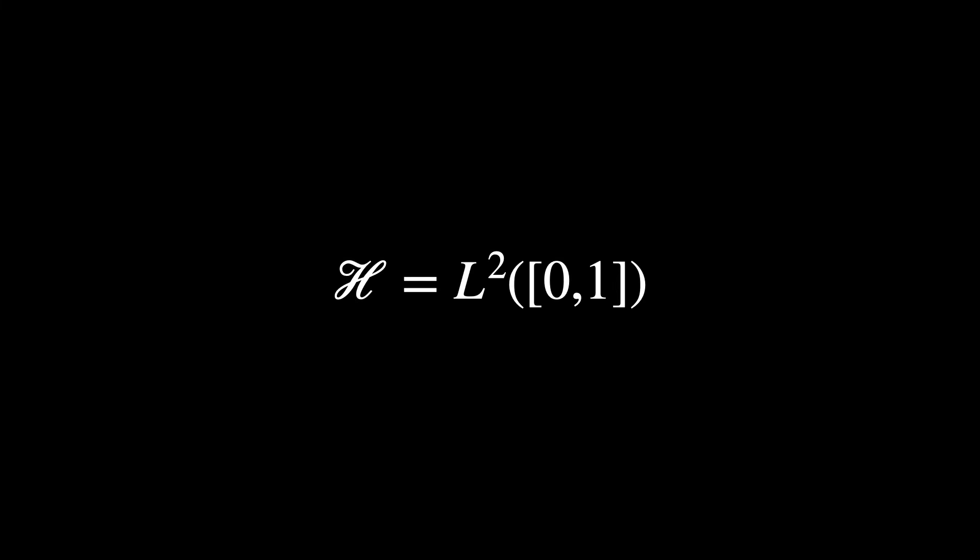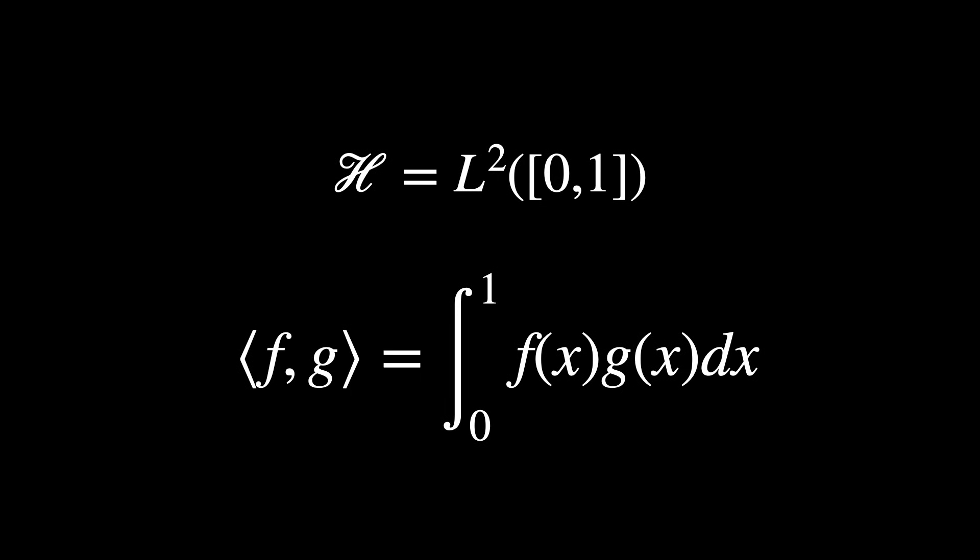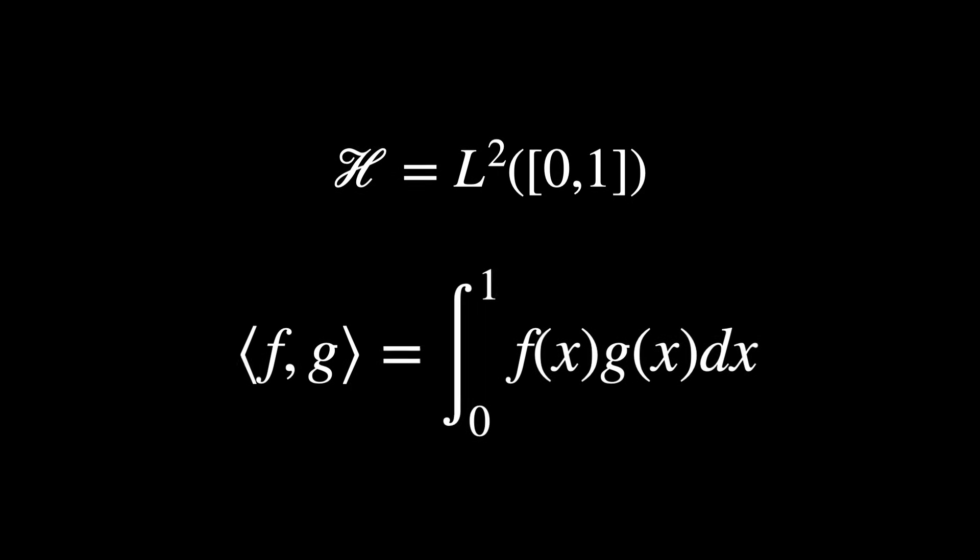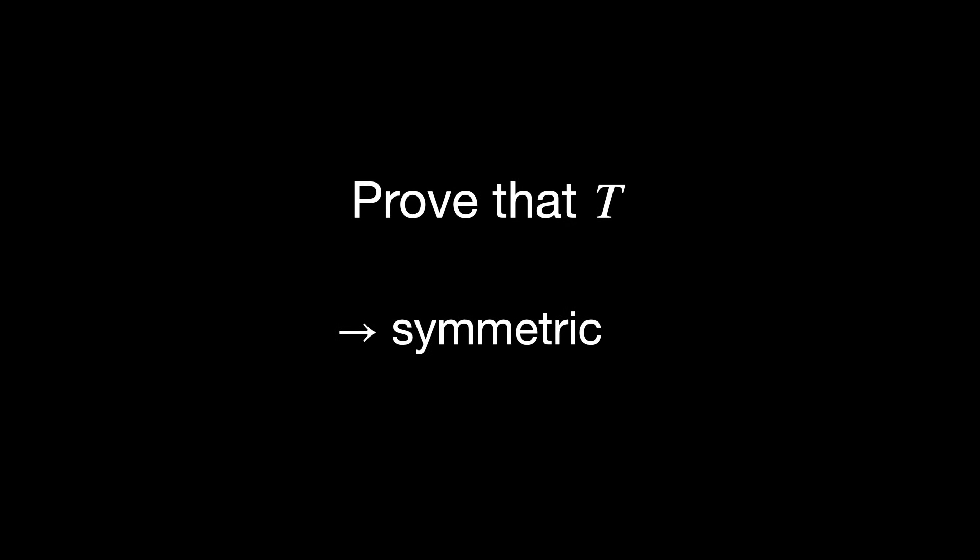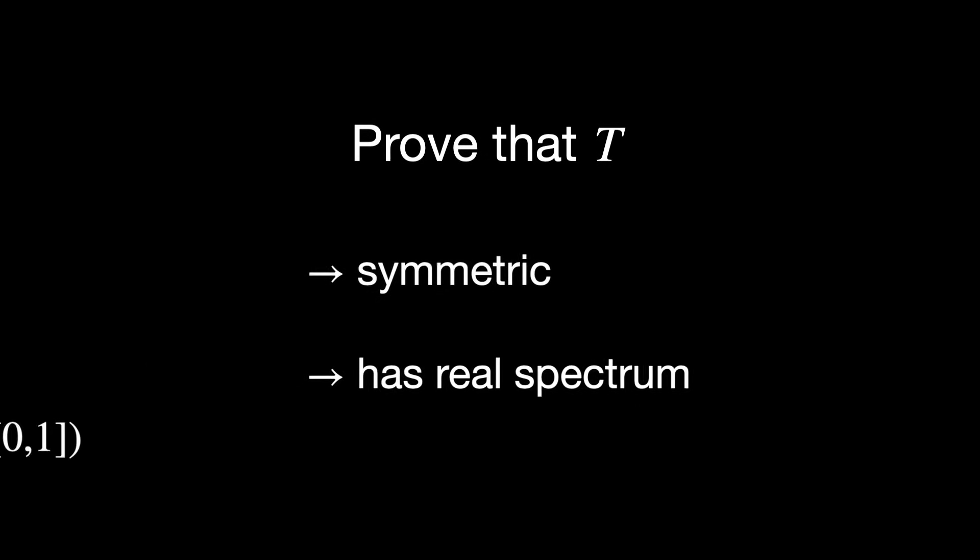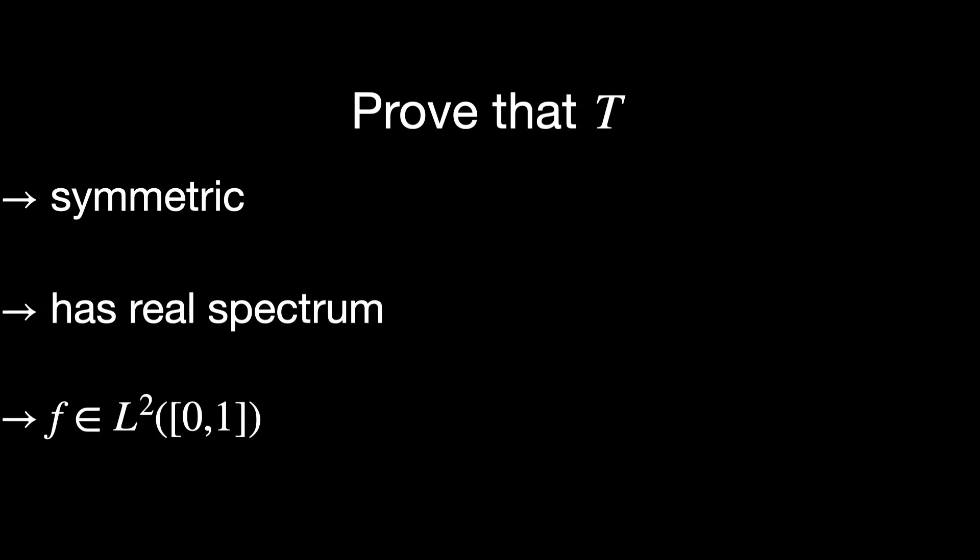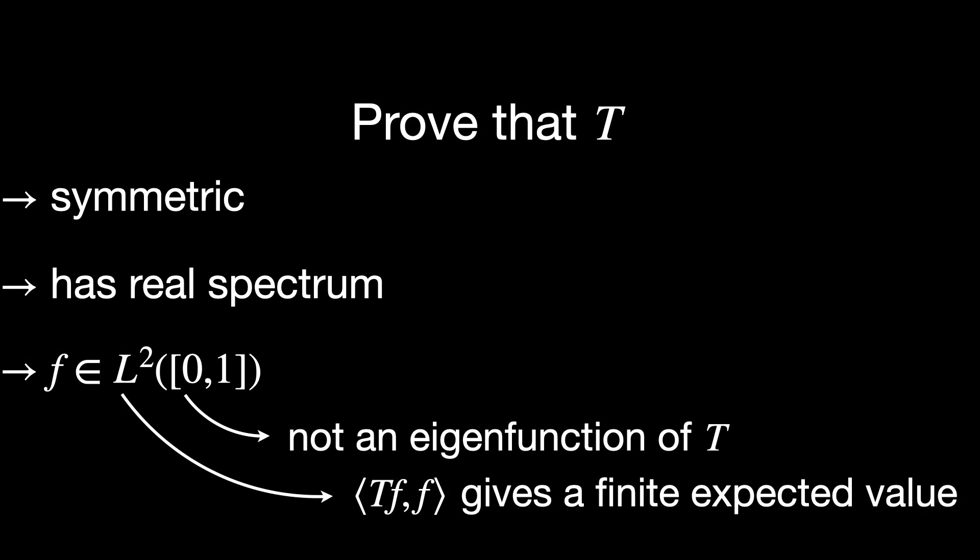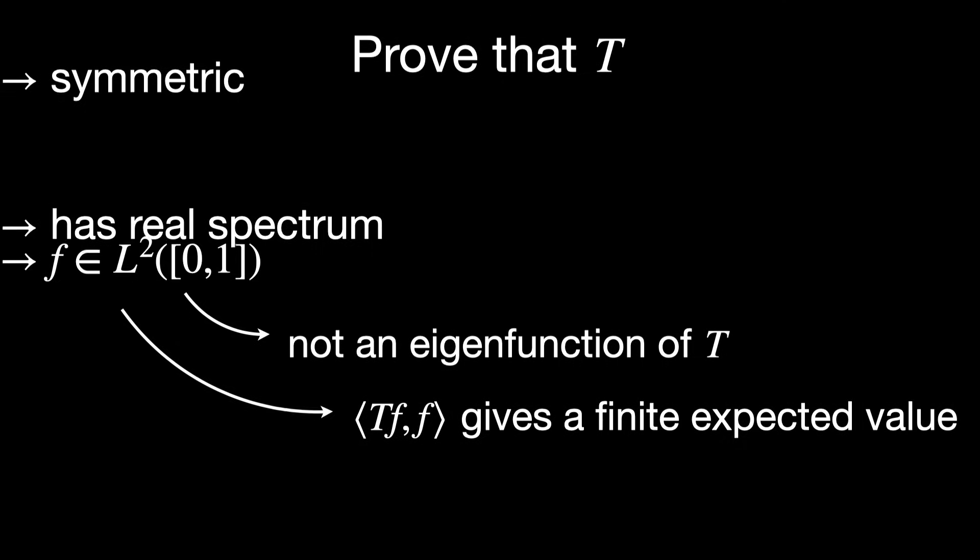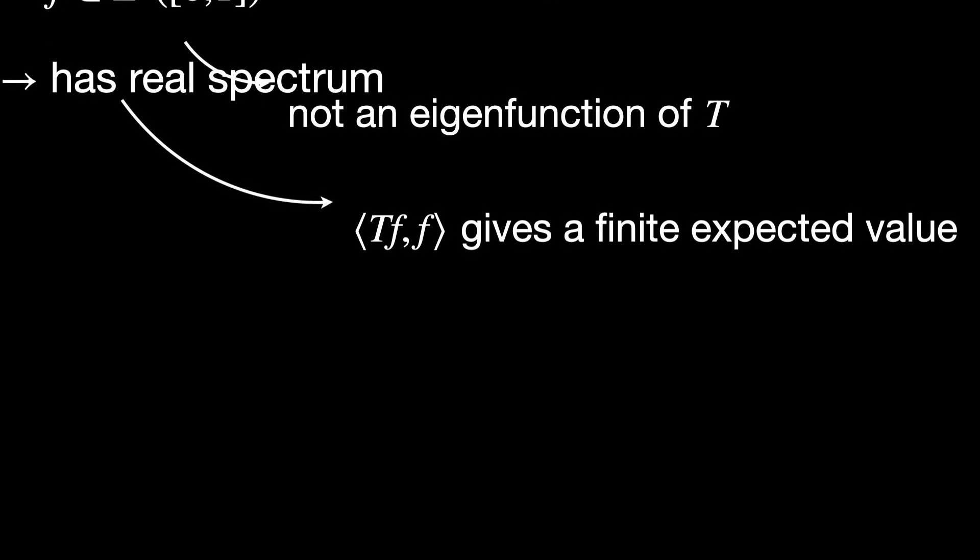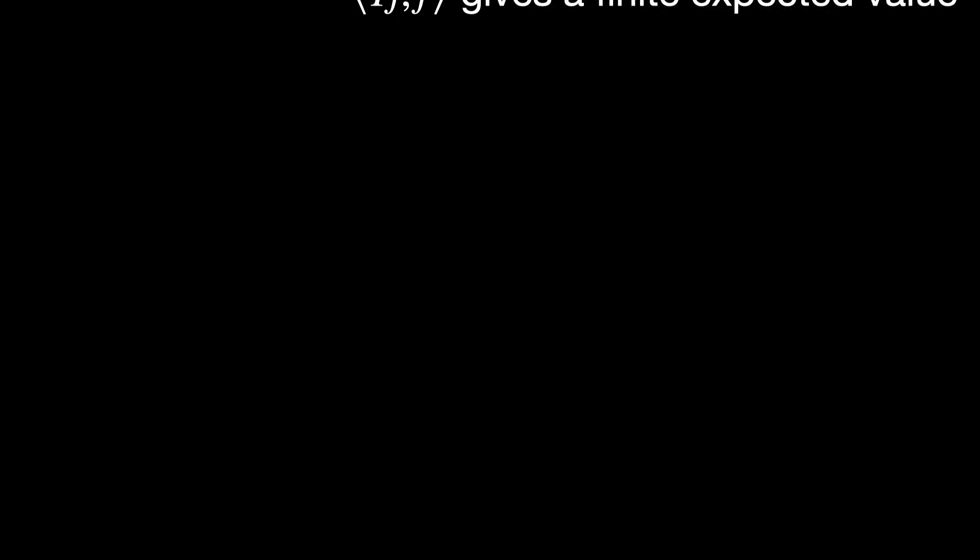Second exercise. Consider the Hubert space L2 over the closed interval 0,1. This is the space of square integrable functions on the interval 0,1 with the inner product shown here. Define the operator T just as the position operator we've seen before. Your goal is to prove that T is symmetric. Then, show that T has real spectrum. And finally, find a function F inside of this Hilbert space that is not an eigenfunction of T, but for which the inner product of TF with F still gives a finite expected value. These results will definitely stretch your mind to make sense of everything we've seen so far. And probably, you'll be forced to look up more rigorous definitions in order to solve them. But that's also part of the process.